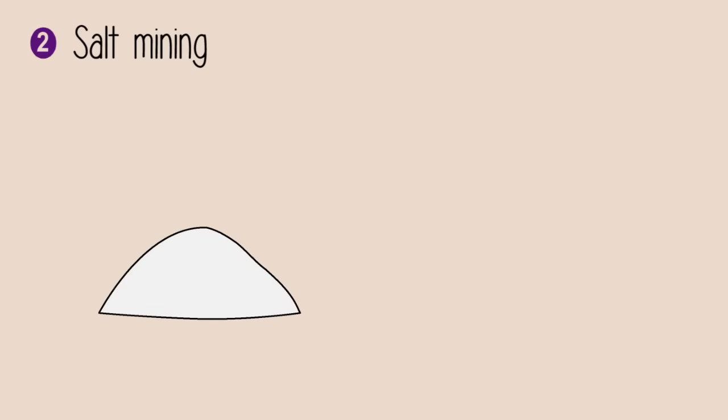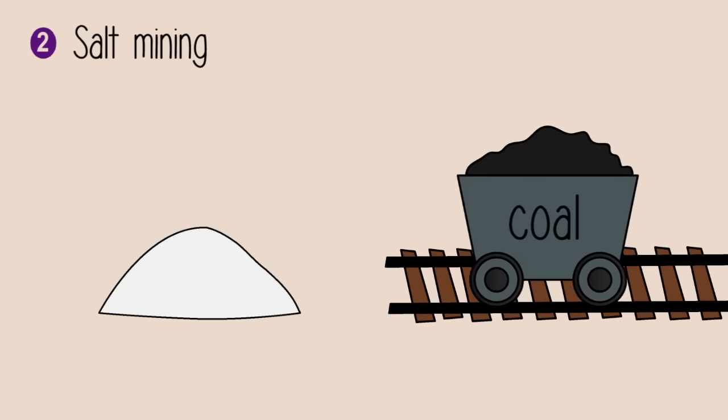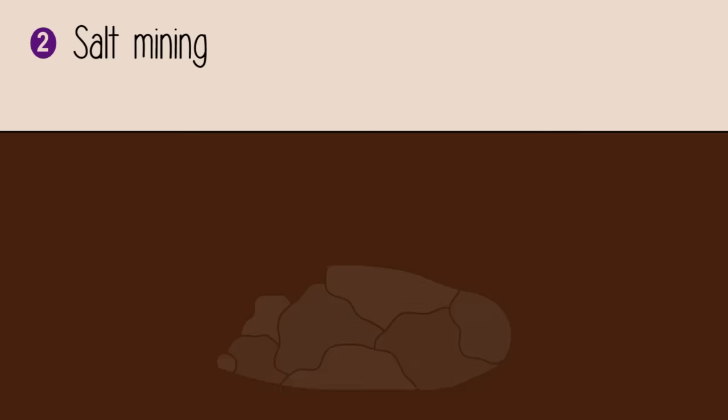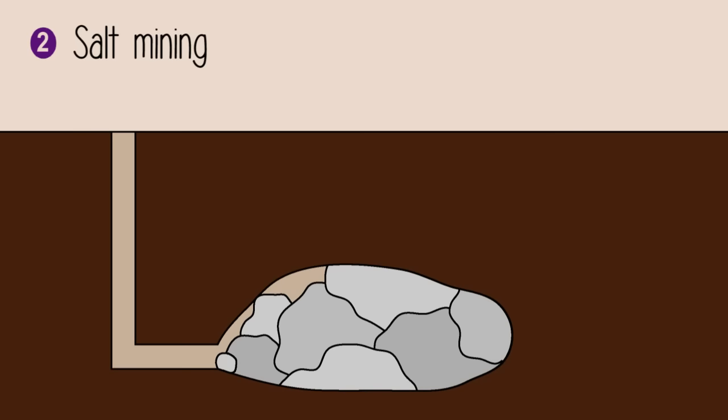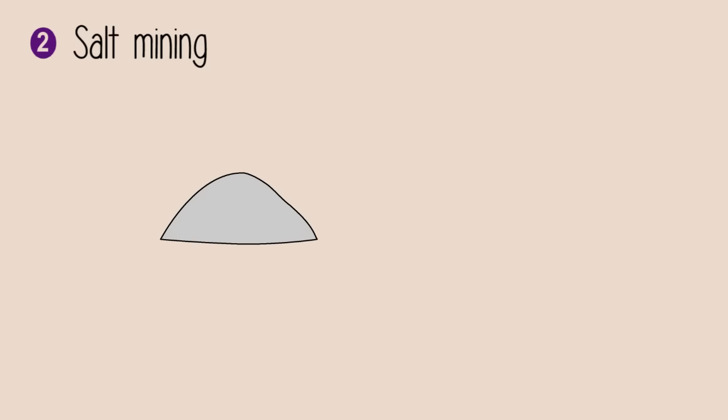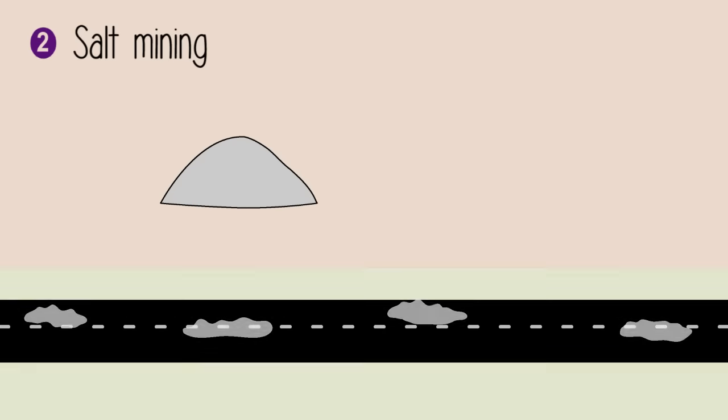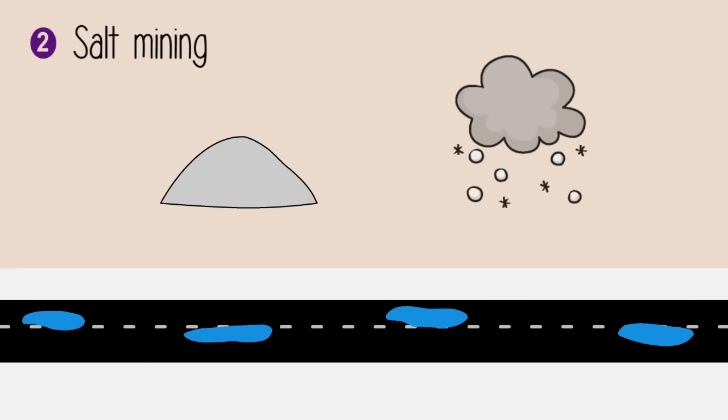Salt can also be mined in the same way that coal is mined. This is done by heavy machinery, breaking away large chunks of rock salt from underground salt deposits. The rock salt obtained from mining is not usually used for consumption, but rather to de-ice roads and pavements in colder climates right before a snowstorm.